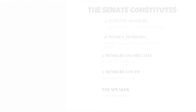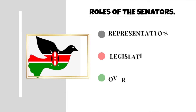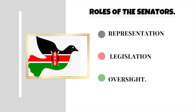The roles of the Senate are three: representation, legislation, and oversight. You will notice that in these roles, there is nothing mentioned about being given the mandate to build roads or exact construction of infrastructure. Their main roles are legislation, representation, and oversight.